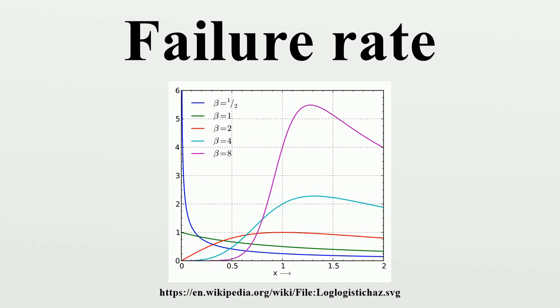The failure rate of a system usually depends on time, with the rate varying over the life cycle of the system. For example, an automobile's failure rate in its fifth year of service may be many times greater than its failure rate during its first year of service.